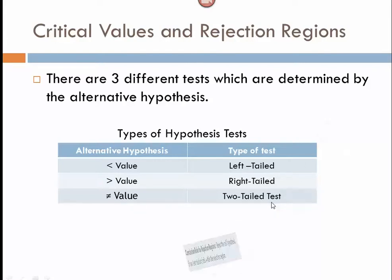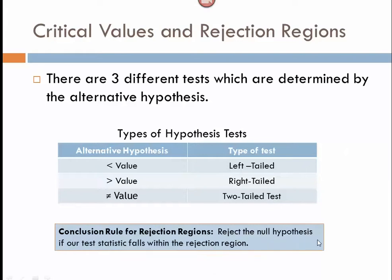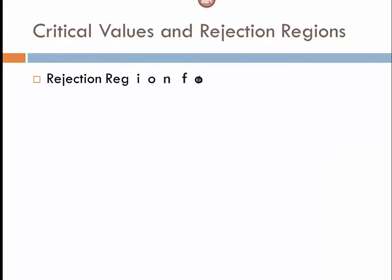And in the critical value approach, our conclusion rule is that we're going to reject the null hypothesis if our test statistic falls within the rejection region. In other words, it gets beyond my boundary value.